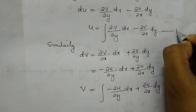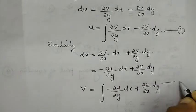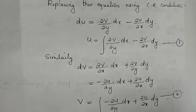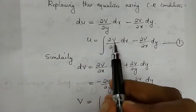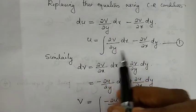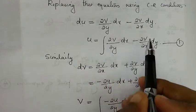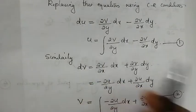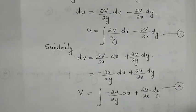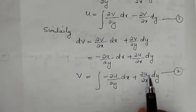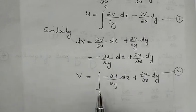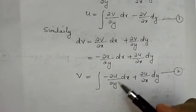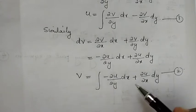Now we have two equations. We express u or v using these formulas. Since we have the value of u, we can compute v, and then f(z) = u + iv.